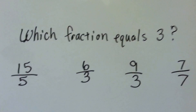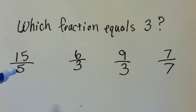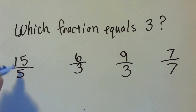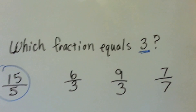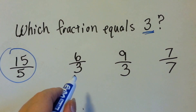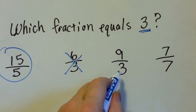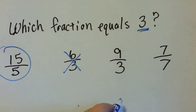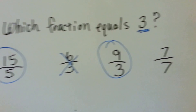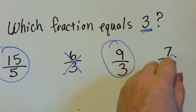Which of these fractions are equal to three? Fifteen fifths — five goes into fifteen three times, so that equals three. Six thirds — how many times does three go into six? Two times, so that's not three. Nine thirds — how many threes fit into nine? Three of them, so that's equal to three. How about seven sevenths? The numerator and denominator are the same, so it equals one — that doesn't equal three.